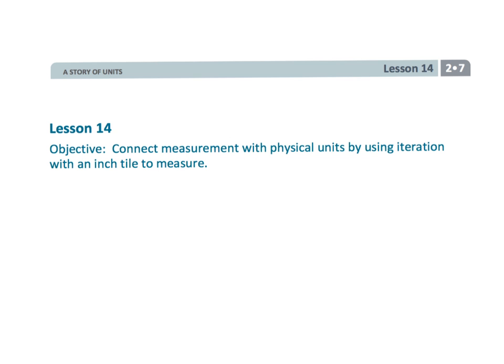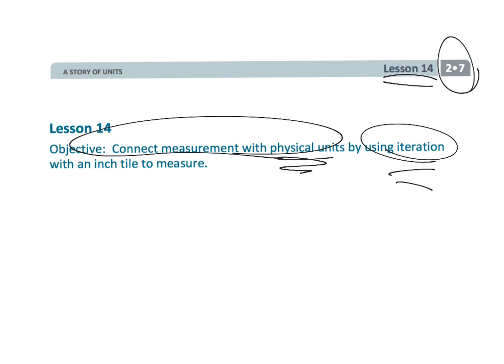And that wraps up second grade module seven lesson 14. We are measuring, but at this point we are using a physical thing, a square inch, and we are using it in an iterative fashion rather than actually using a ruler.